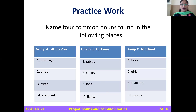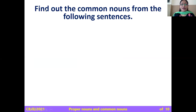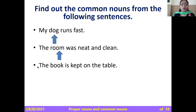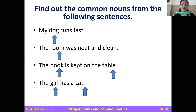I hope you understood what a common noun is. Now find the common nouns from the following sentences. 'My dog runs fast' — the common noun is 'dog.' 'The room was neat and clean' — 'room' is the common noun. 'The book is kept on the table' — 'book' and 'table' are both common nouns. 'The girl has a cat' — the common nouns are 'girl' and 'cat.'